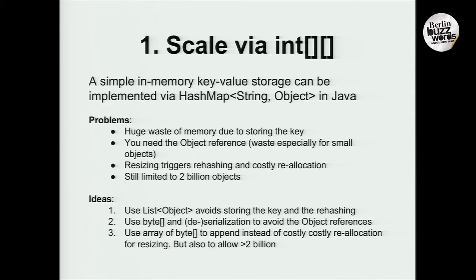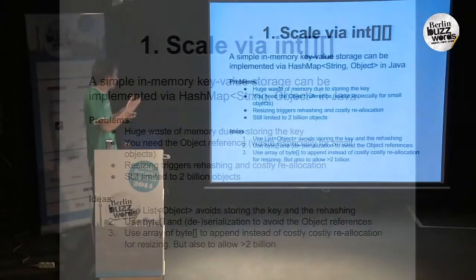To introduce why we use something like an integer array, consider how you'd implement a simple in-memory key-value storage in Java: a HashMap with a string as key and an object as value. There are problems: you waste memory storing the key when it could just be an index, you need object references rather than inline values, resizing requires rehashing and costly reallocation, and the HashMap is still limited to 2 billion objects.